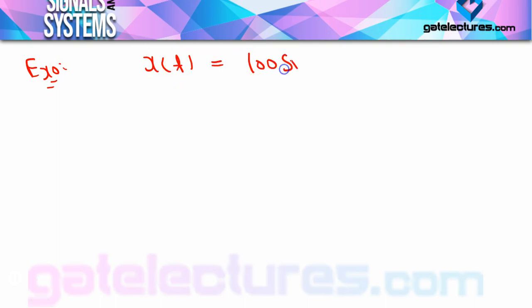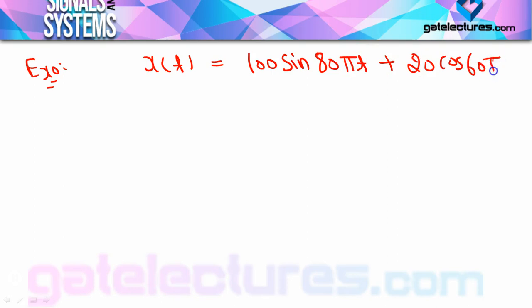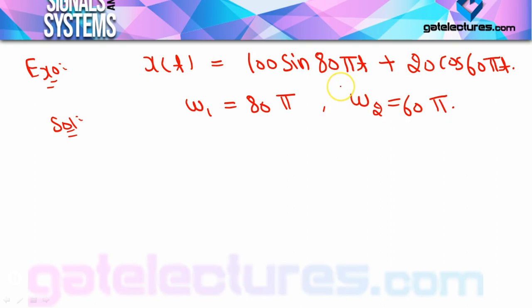Example: x(T) = 100 sin(80πt) + 20 cos(60πt)। Check करना है कि यह overall signal periodic है कि non-periodic, और अगर periodic है तो period कितना होगा। Amplitude से कोई मतलब नहीं है; periodic/non-periodic के case में सिर्फ omega देखना है। ω₁ = 80π, ω₂ = 60π। T₁ = 2π/ω₁, T₂ = 2π/ω₂।